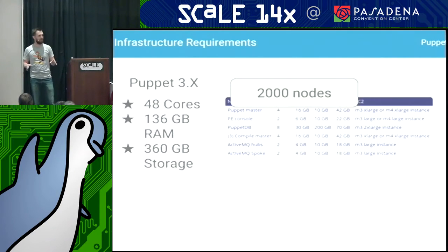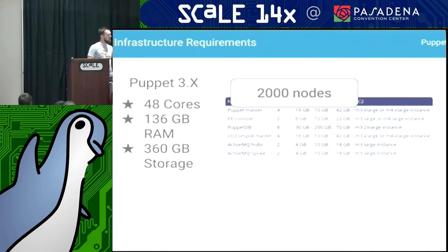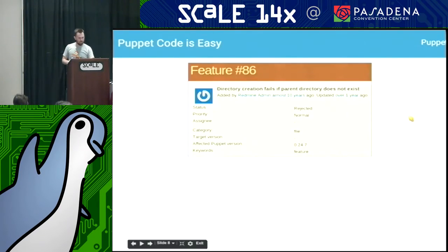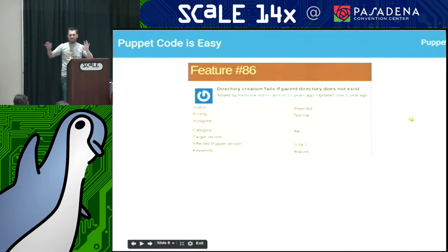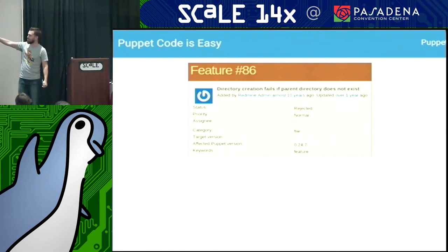Puppet has Puppet code — lots of good things about it. It's a DSL just for config management, so it's got to be good. It's like JSON and Ruby had a baby, so it should be easy to write. And it's mature — Puppet code has been around forever. If anyone knows this bug, it has been around forever — feature, but whatever.